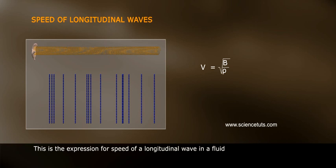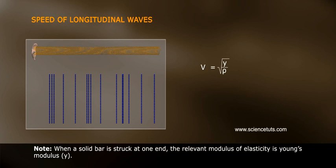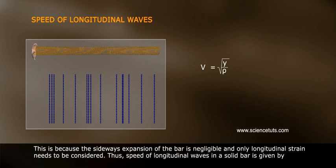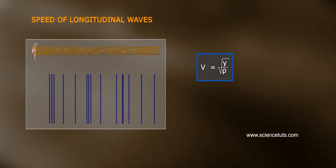This is the expression for the speed of a longitudinal wave in a fluid. Note: when a solid bar is struck at one end, the relevant modulus of elasticity is Young's modulus Y. This is because the sideways expansion of the bar is negligible and only longitudinal strain needs to be considered. Thus, the speed of longitudinal waves in a solid bar is given by v = √(Y/ρ).